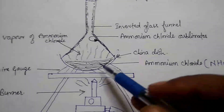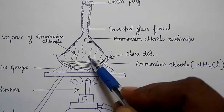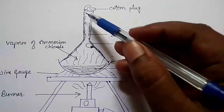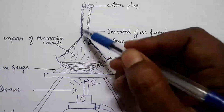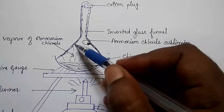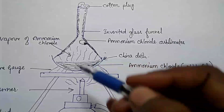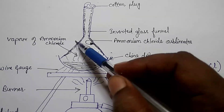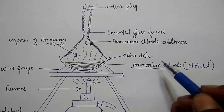When the particles are exposed in the air, their intermolecular force of attraction becomes weaker and they start moving in all directions. Since the china dish is enclosed by a funnel, these particles come in contact with the inner wall of the funnel and start solidifying there. In this way, ammonium chloride collects on the inner side of the funnel and can be removed.